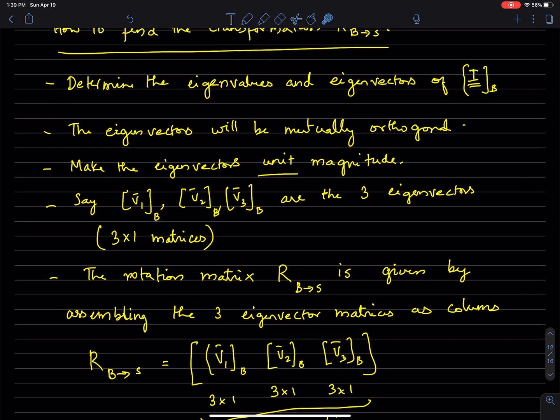So get the eigenvectors — there are going to be three eigenvectors. Make the eigenvectors unit magnitude: if you get non-unit eigenvectors, just divide by the magnitude to get unit magnitudes. The resulting quantities are still eigenvectors.